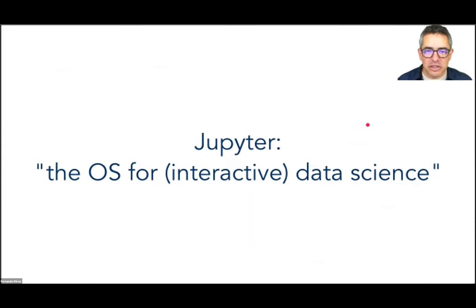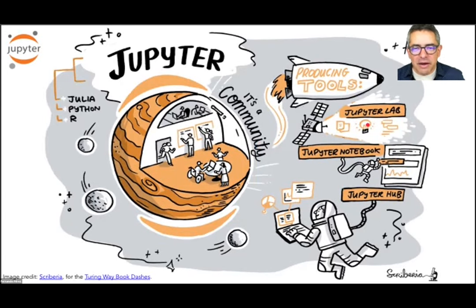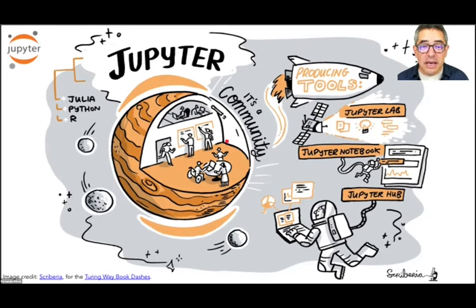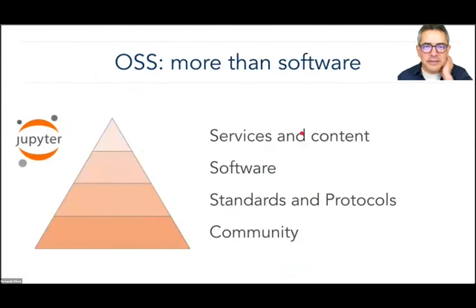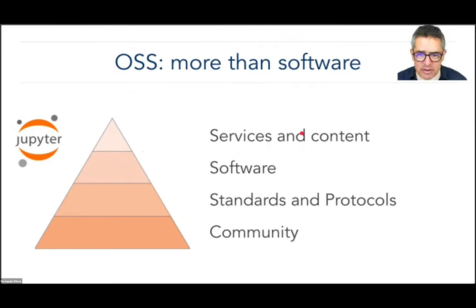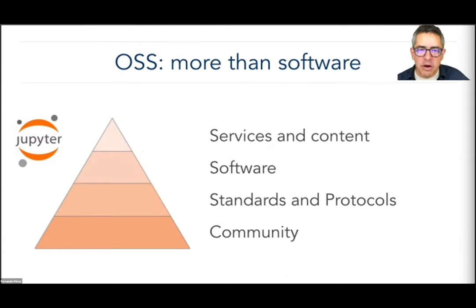One perspective — a little tongue in cheek but not completely — is to think of Jupyter as sort of the operating system for interactive data science, for when humans are in the loop trying to think about their data and problems. I love how the documentation team at the Turing Institute presented Jupyter to the community: it's a project that contains a human community, and that's critically important, that produces tools. Many issues we have with scientific software really go beyond the software itself. Open source software is a lot more than code on GitHub, and in Jupyter we've taken the time to understand that structure.